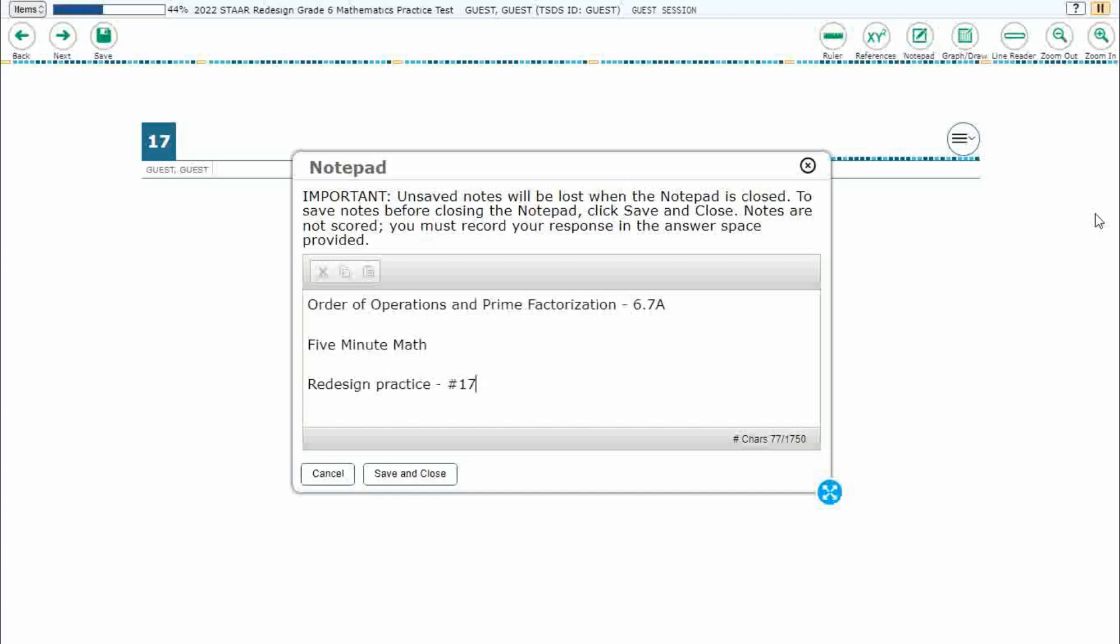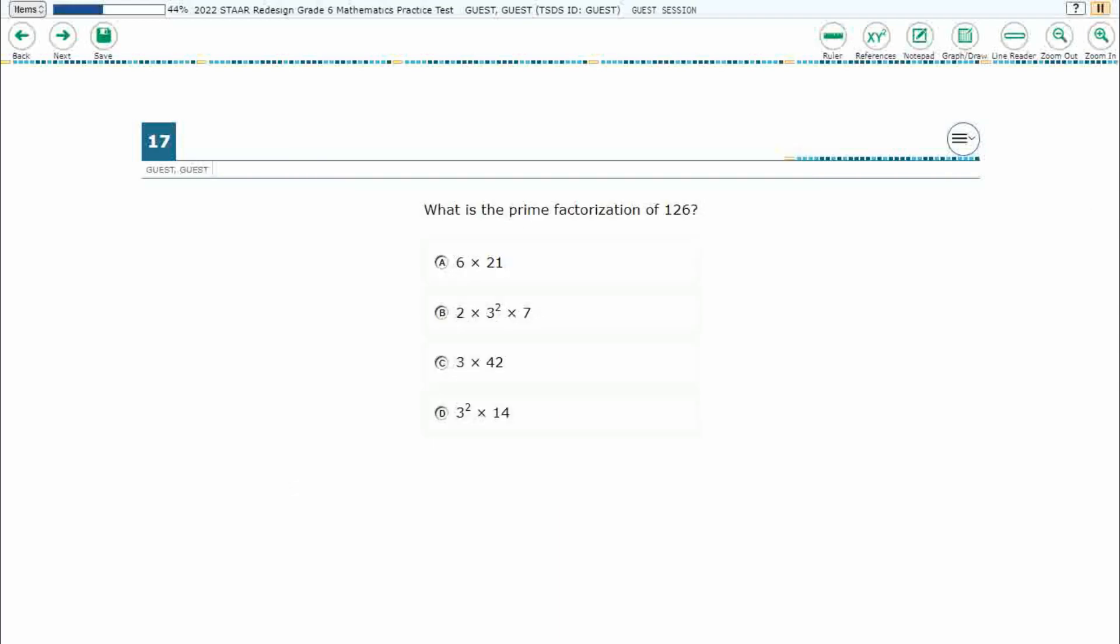Hello, and welcome to 5-Minute Math. Today we are looking at the 6th grade concept of order of operations and prime factorization. This is standard 6.7a in the great state of Texas. We are using item number 17 off the redesigned practice online star test. If you haven't done so already, please go ahead and take a moment to pause the video, work this problem out on your own, unpause it, and we will look at our answers together.